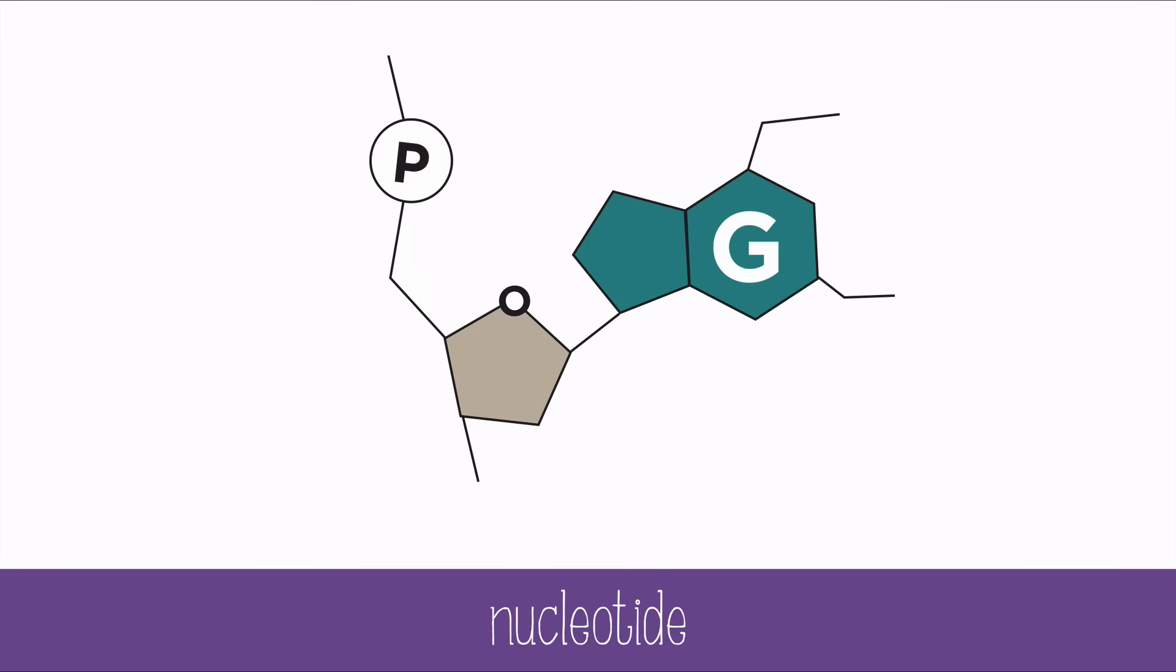The nucleotide has three main parts: a phosphate group, a sugar, and a nitrogen base. In DNA, the name of the sugar is deoxyribose, which is part of DNA's name.